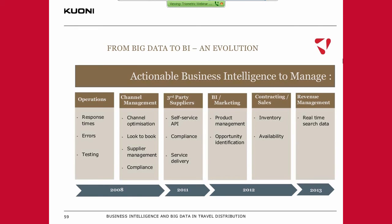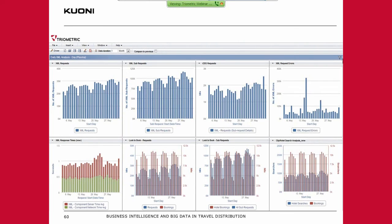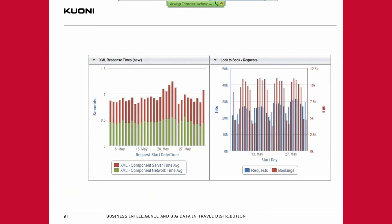The future for us is to continue to work with Triometric to develop this product. The next phase is taking our search data and pushing it into our revenue management system to make sure we're getting the most out of our product — that where people are searching, we can ensure the pricing is right. There is our dashboard, which gives us visibility all the time of our XML requests and errors. This particular dashboard view shows daily response times, and we have another that sits in our office showing real-time, per-minute values. It also allows us to have monitoring around anomalies — sudden fluctuations either increase or decrease in requests or errors coming through.